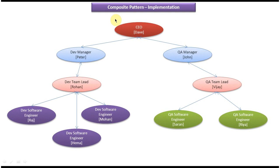This is the tree structure of an organization. Here Dave is the CEO, and Peter and John are working under Dave. Peter is a development manager and John is a QA manager. Rohan is a development team lead working under Peter, and Vijay is a QA team lead working under John.